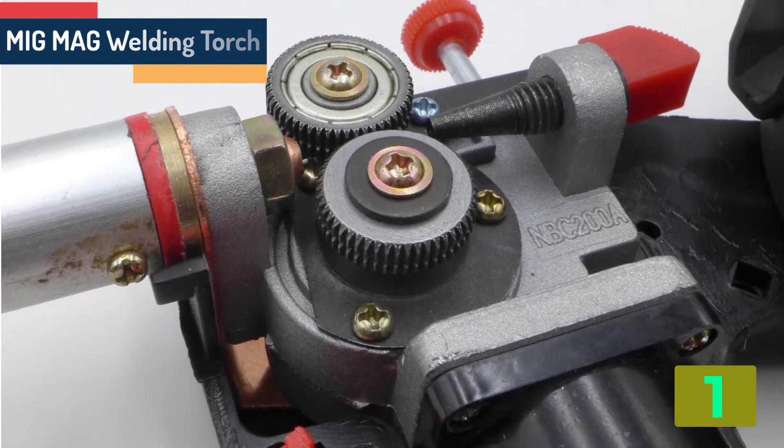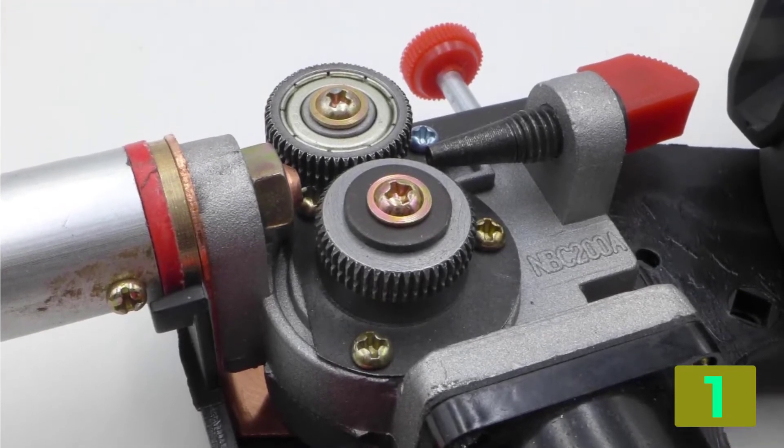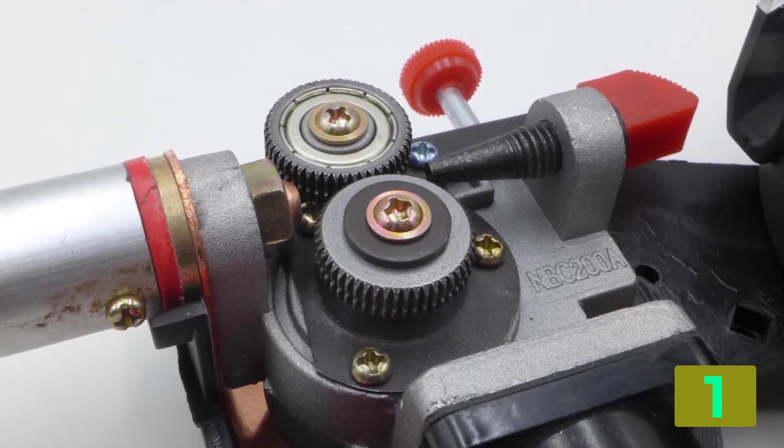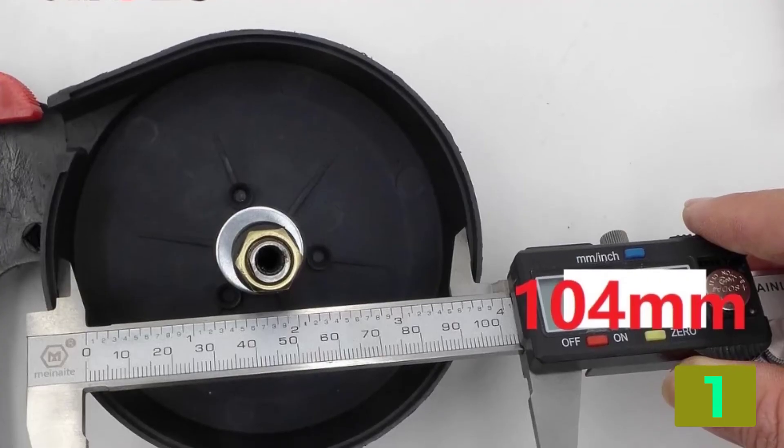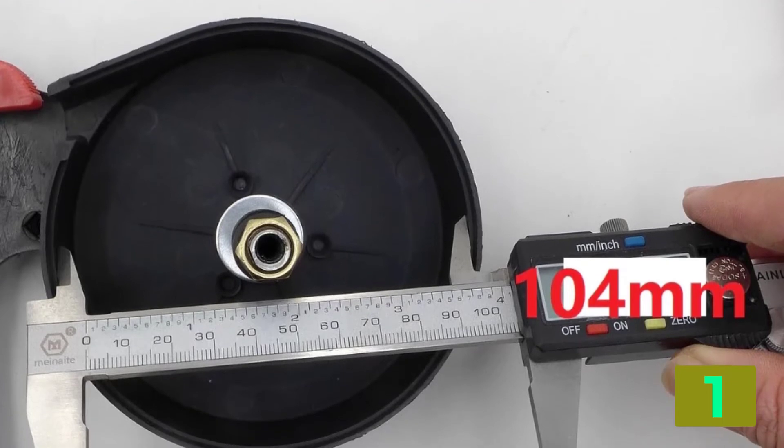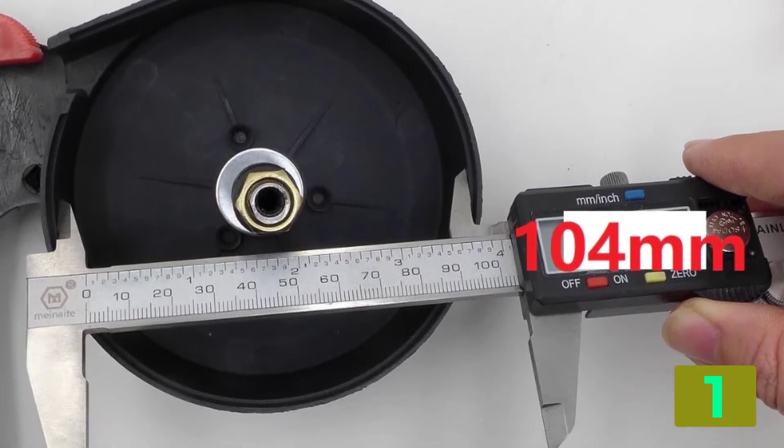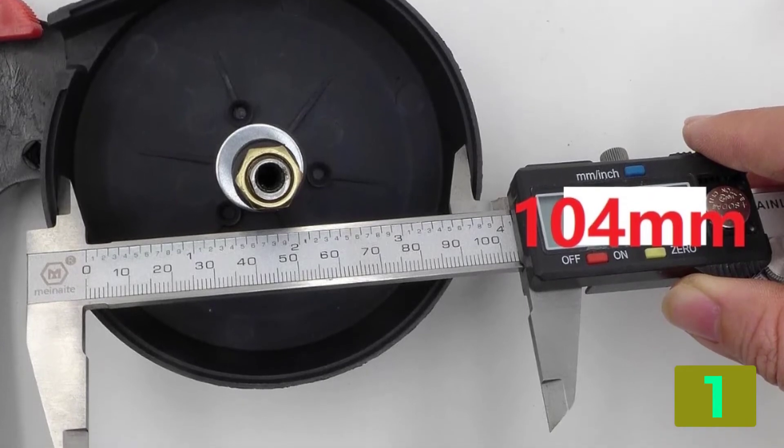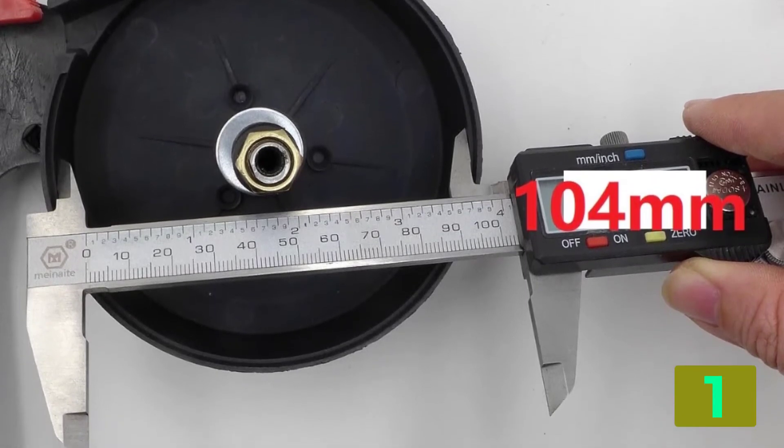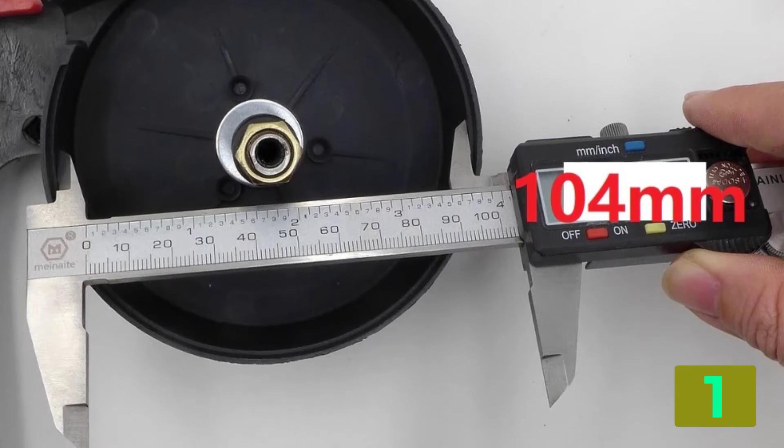Specifications: Brand name GINSLA, Certification none, Origin CN Origin, Type Welding Torch, Model number NBC 200, Welding type MIG Torch, Welding capacity 200A at 35% duty cycle.